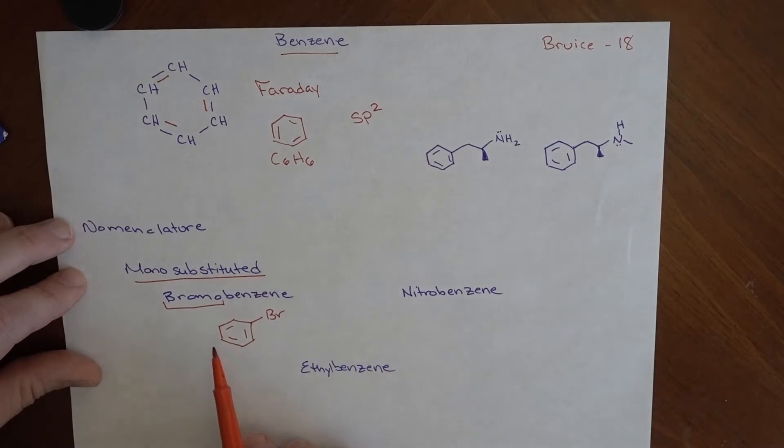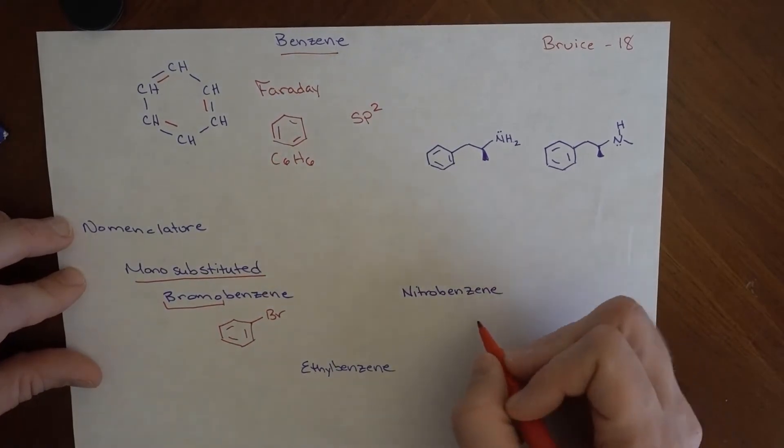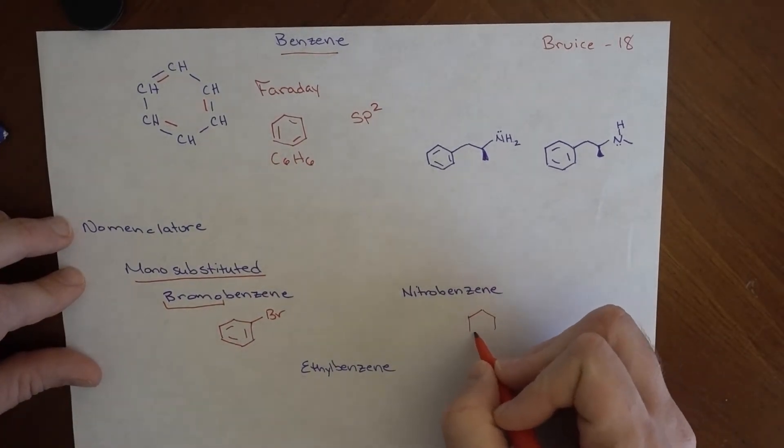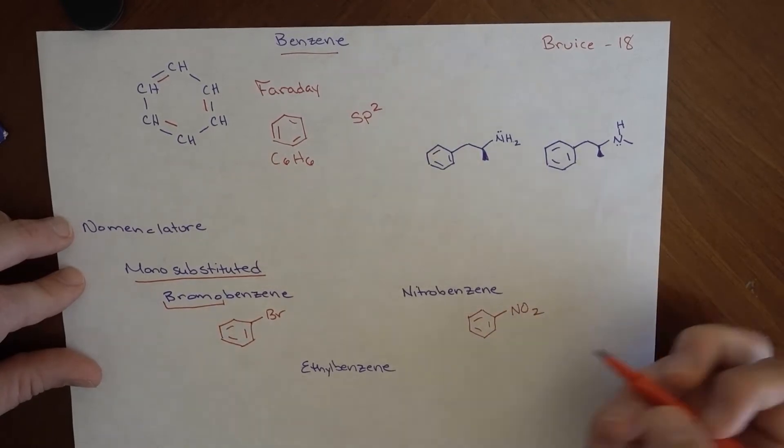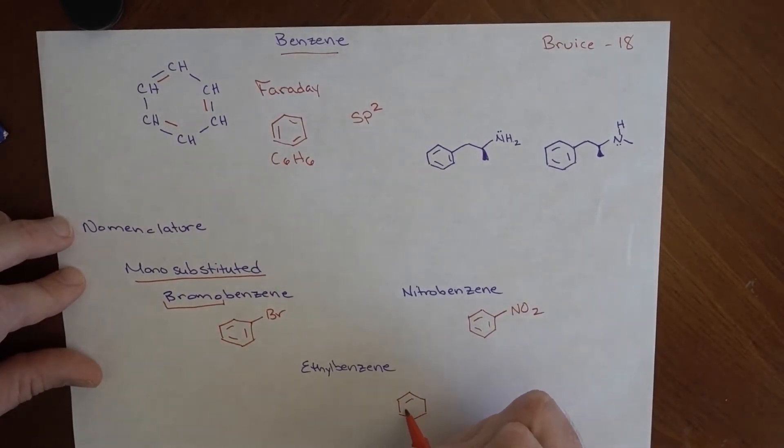So bromobenzene would be a benzene with a bromine on it. And if we had put it here, here, here, anywhere else, it wouldn't matter. We don't have to say one bromobenzene if it's the only thing on there. It is one. So nitrobenzene would be this. Ethylbenzene would be this. Also looks like this. Okay.